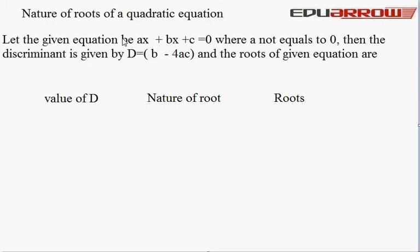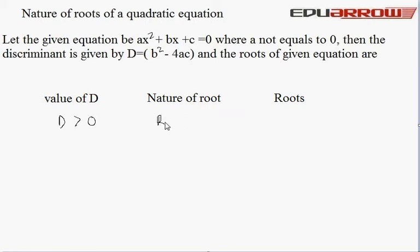Now we read the nature of roots of a quadratic equation. Let the given equation be ax² + bx + c = 0, where a ≠ 0. The discriminant is D = b² − 4ac. The roots of the given equation depend on the value of D. If D is greater than 0, the nature of the roots is real and unequal.